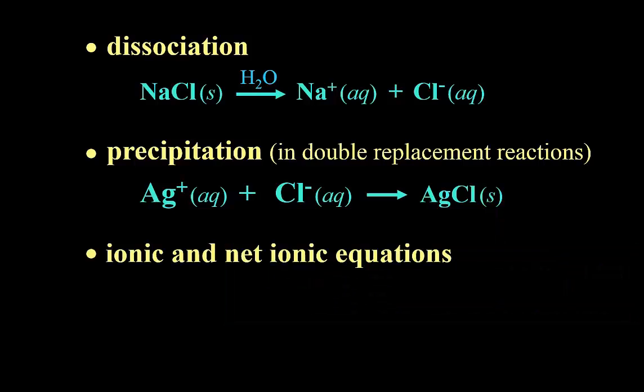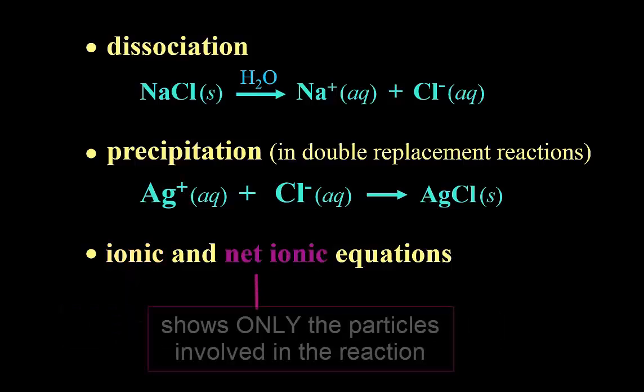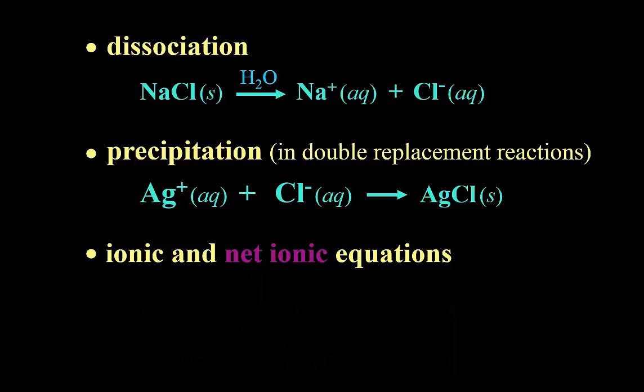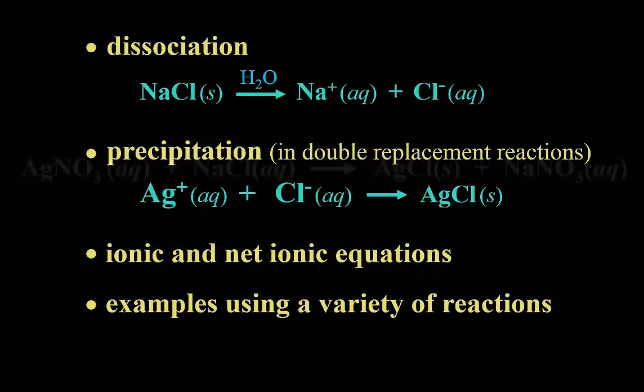And so that will lead us into ionic and net ionic equations, where the ionic equation shows all the individual particles from an equation and the net ionic shows only the particles involved in the reaction. And this will all be explained in the rest of the video using double replacement and one single replacement just to have some fun.